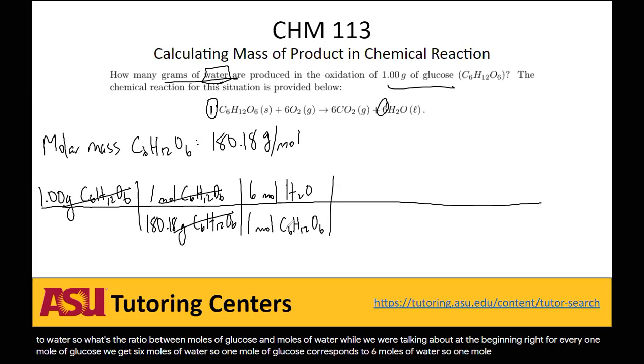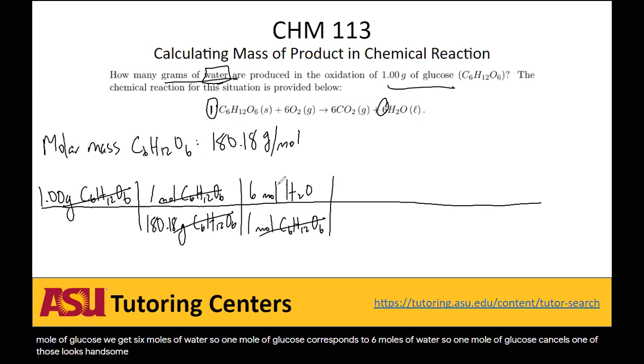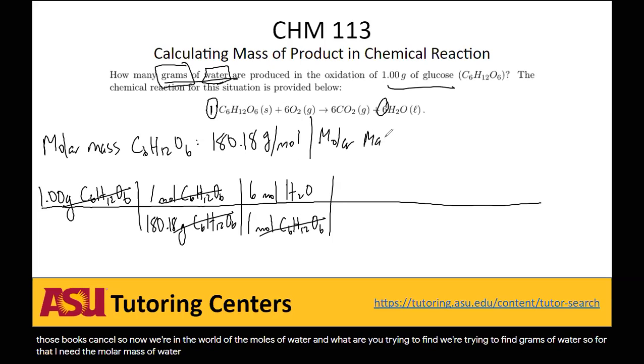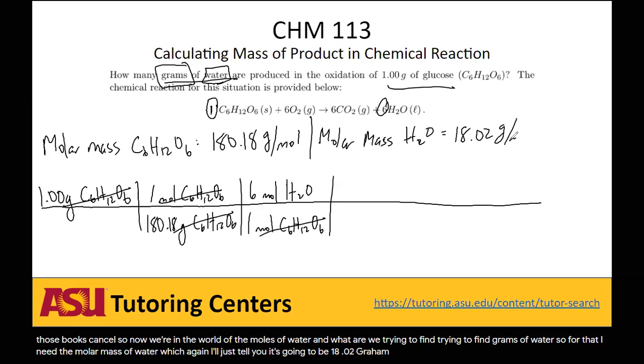So 1 mole of glucose cancels. So now we're in the world of the moles of water. And what are we trying to find? We're trying to find grams of water. So for that, I need the molar mass of water, which I'll just tell you is going to be 18.02 grams per mole.